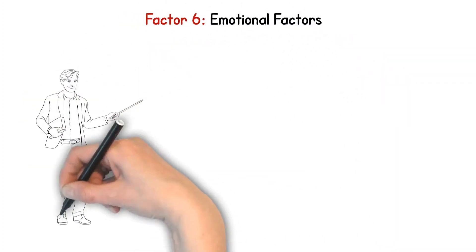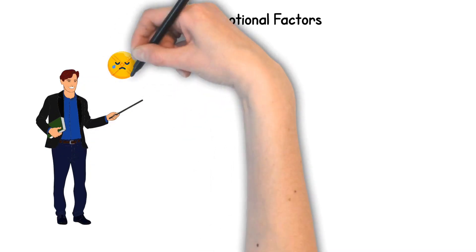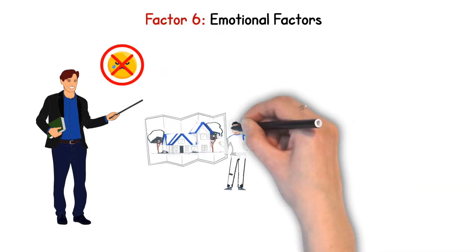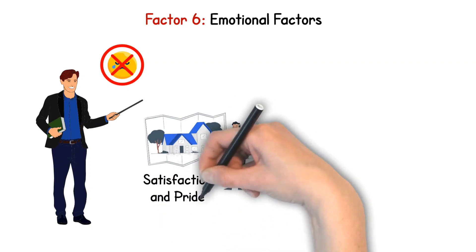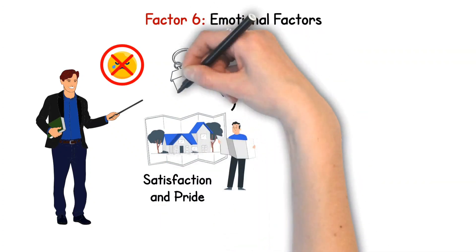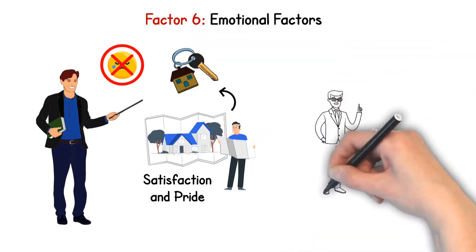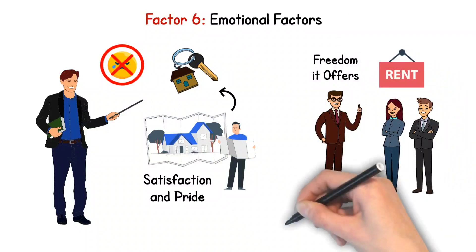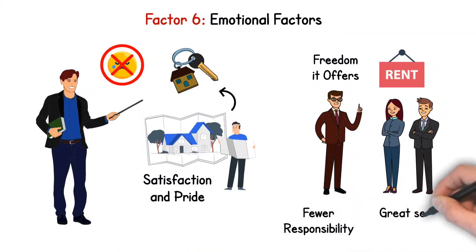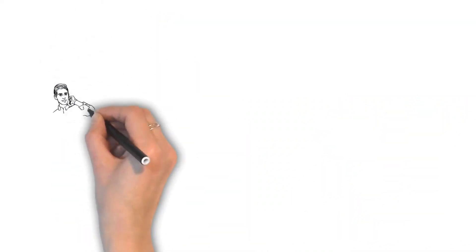Factor 6. Emotional Factors. Finally, let's not overlook the role our emotions play. The deep satisfaction and pride that come with owning your own home can be incredibly fulfilling. There's something special about having a space that's solely yours. But remember, renting too has its perks. The freedom it offers, along with fewer responsibilities, can provide a great sense of tranquility to many.